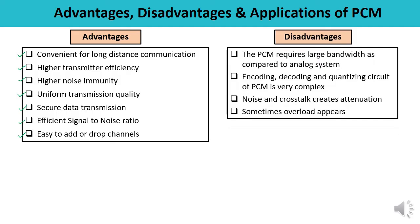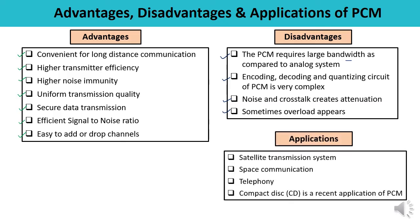Some disadvantages of PCM: it requires large bandwidth compared to analog systems; the design of encoding, decoding, and quantization circuits is a little complex; and there are certain problems of noise and crosstalk, which may cause signal attenuation and sometimes overload. Despite these disadvantages, PCM is used in a number of fields, including satellite transmission systems, space communication, telephony, and compact disks. These are the various applications where pulse code modulation is successfully used. Thank you so much for watching this video.